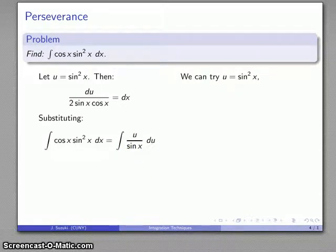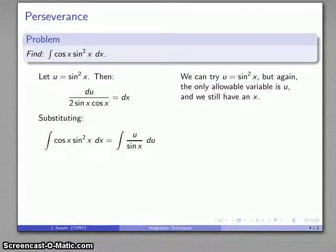And once again, I'm in the position where the only allowable variable is U. That's good, but the sine of x is still there. And so I don't have a proper substitution. I can't do this anti-derivative.